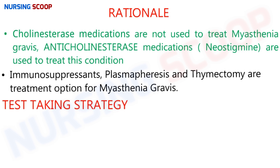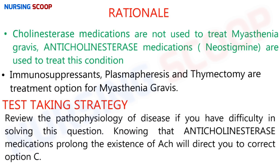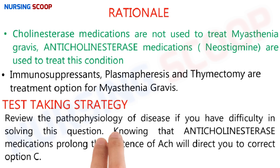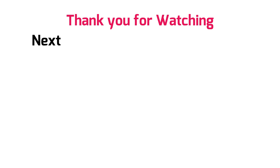Test-taking strategy: review the pathophysiology of the disease if you have difficulty with this question. Knowing that anticholinesterase medications increase the availability of acetylcholine will direct you to the correct option C. That's all for today's video — I'll make one more video on myasthenia gravis to cover myasthenia crisis, cholinergic crisis, and treatment modalities.